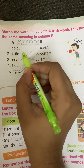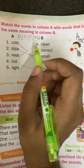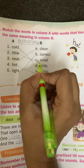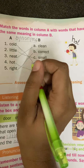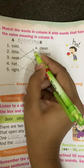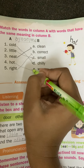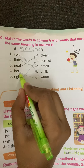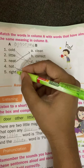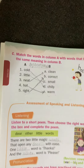Match the words in column A with words that have almost the same meaning. Cold matches with chilly. Little matches with small. Neat matches with clean. Hot matches with warm. Right matches with correct.